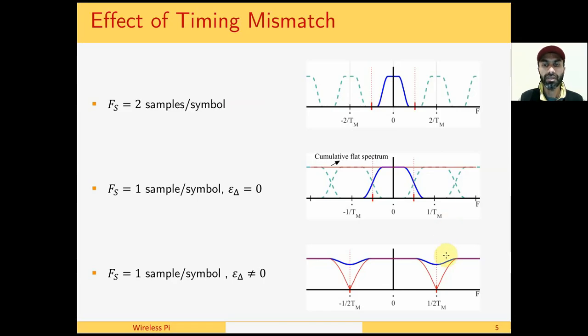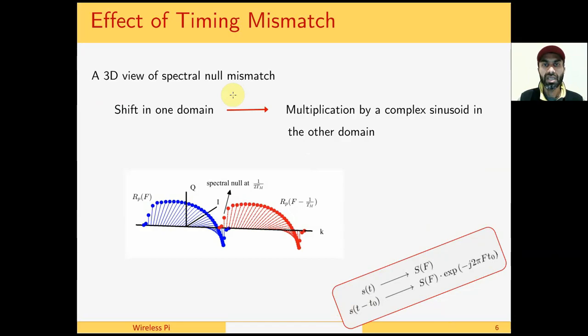However, when the timing is not right, the aliases result in dips in these regions. In an extreme case we even can have a spectral null at these frequencies of 1 over 2TM and minus 1 over 2TM.